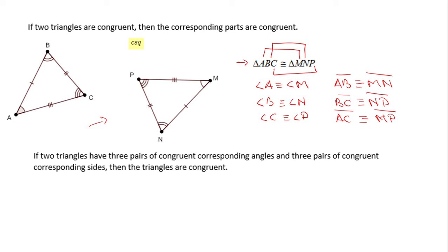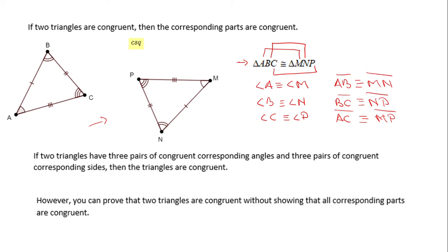If we have two congruent triangles, we have six corresponding congruent parts. The converse of that statement also works: if two triangles have three pairs of congruent corresponding angles and three pairs of congruent corresponding sides, then the triangles are congruent. However, we do not need to know that all six parts are congruent — we only need three corresponding congruent parts.